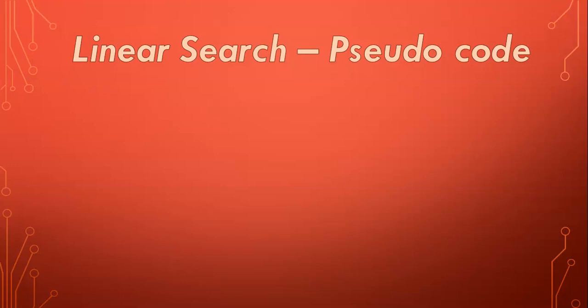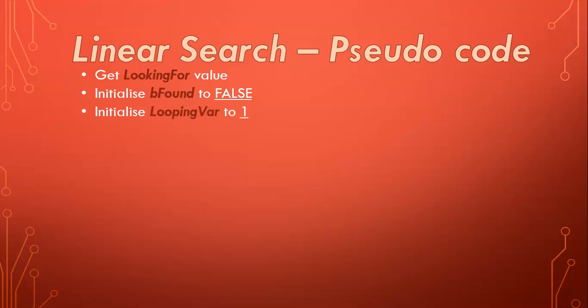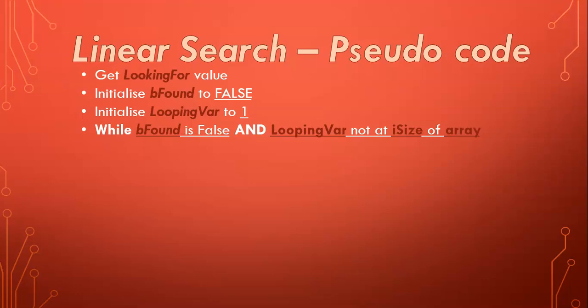So let's look at the pseudocode. We get the value we are looking for — call it the U2 value, for those of you who know the song 'Still Haven't Found What I'm Looking For.' We initialize 'be found' to false and our looping variable to one. Now here's our while loop: while 'be found' is false and while we haven't reached the end of the array, keep looking. The moment one of those conditions is not true, we must stop looking — once we find it, or once we've reached the end of the array.